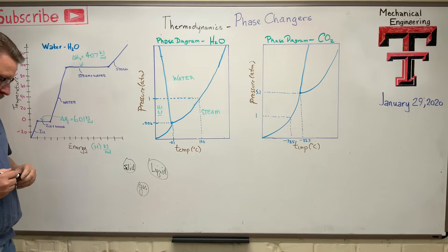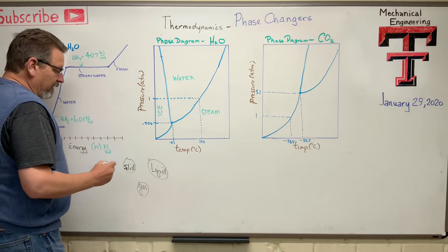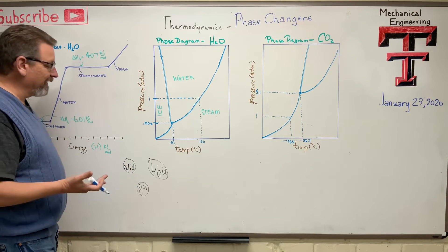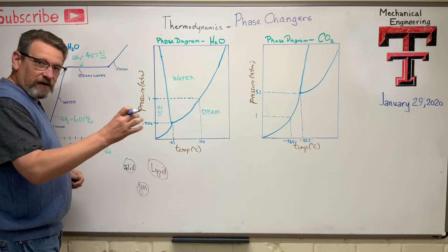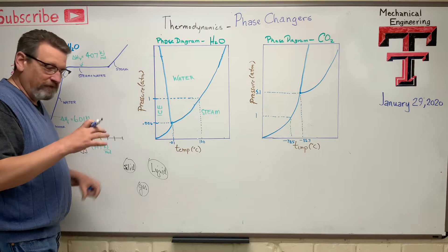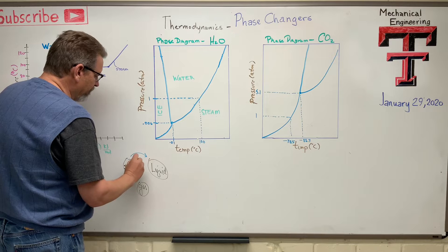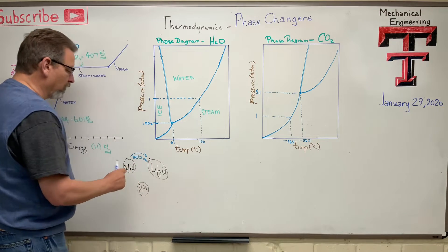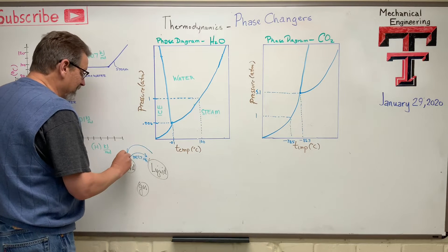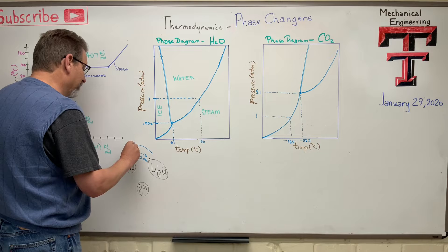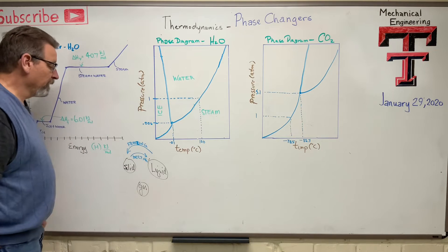How does that happen? A lot of us know how that happens or we've seen it. When you go from a solid to a liquid, think about water — if you left a glass in the freezer overnight until it was completely frozen and then set it on the counter, it would melt. Melting is what we call going from a solid to a liquid. Going from a liquid to a solid — like putting it in the freezer — is called freezing.